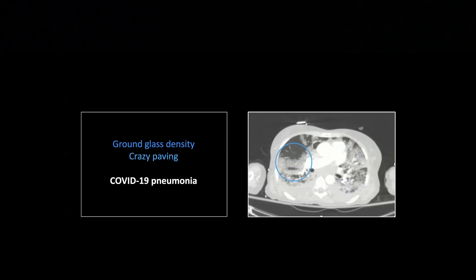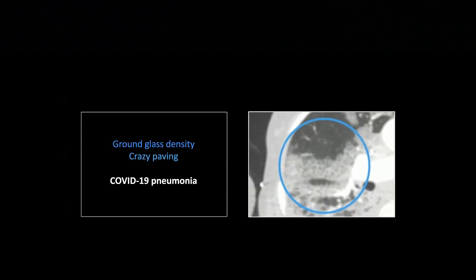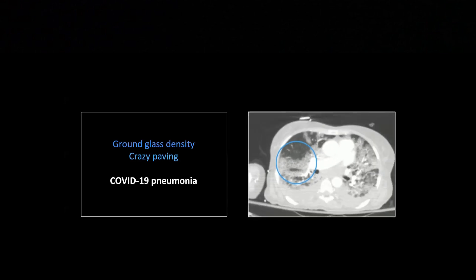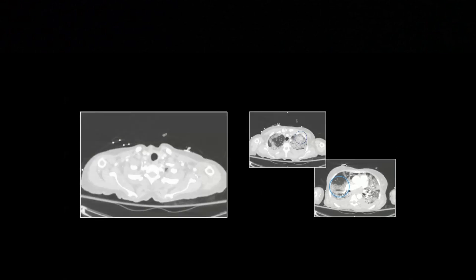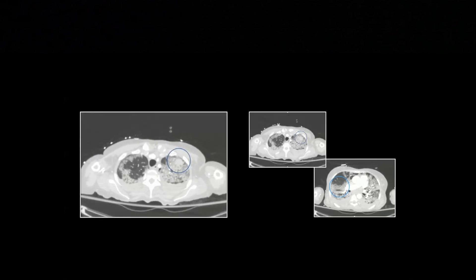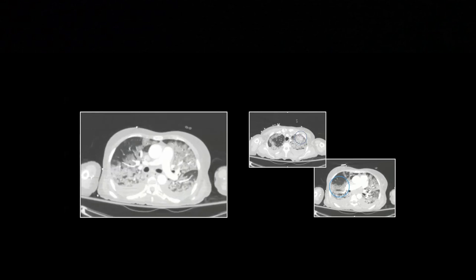Now here is about the most extreme example of crazy paving that I could find. You see how it starts to look, it looks almost like chain mail, with little squarish circles all connected together there. That again is intralobular septal thickening. If you look up the differentials on both ground glass and crazy paving, you'll get pages and pages of stuff that could potentially do this. But certainly COVID is something that should come to mind in this day and age.